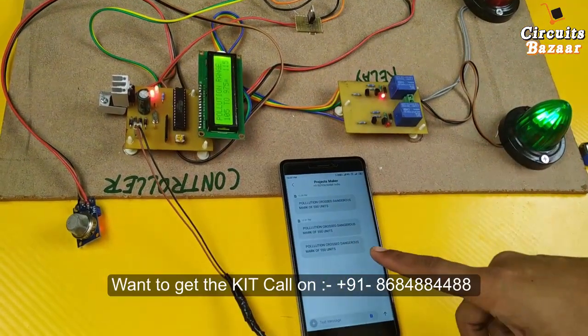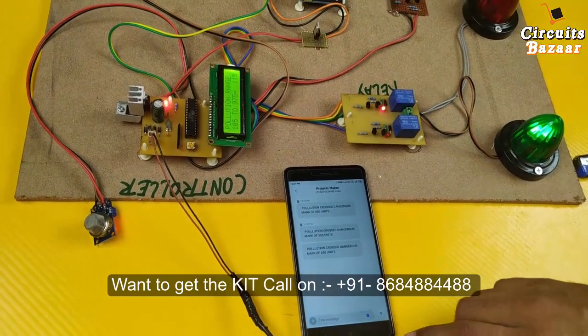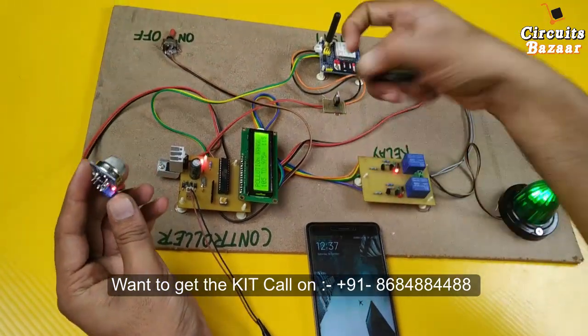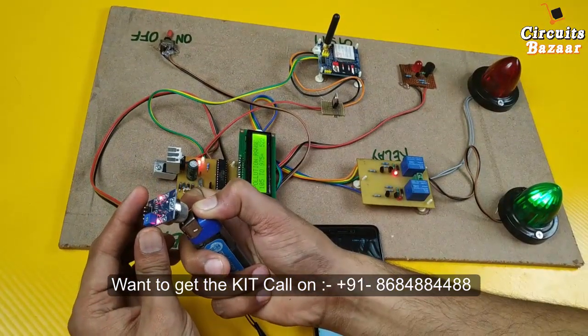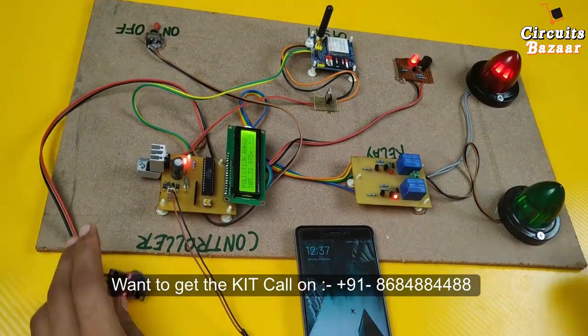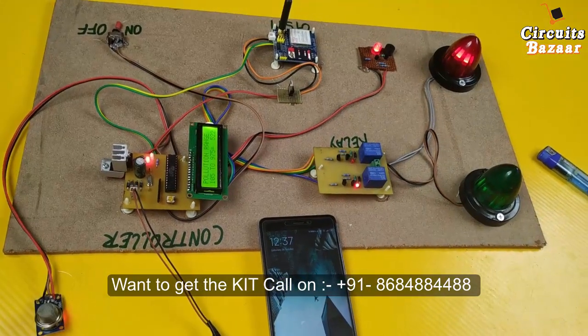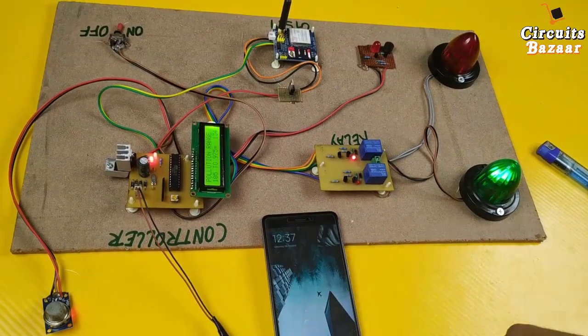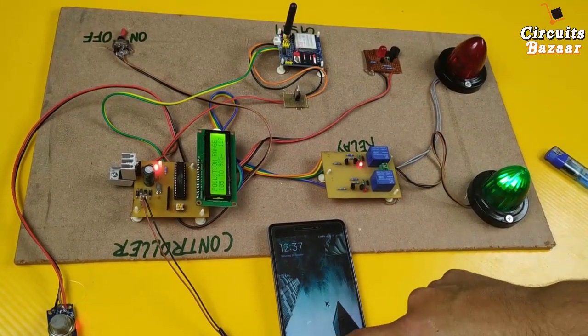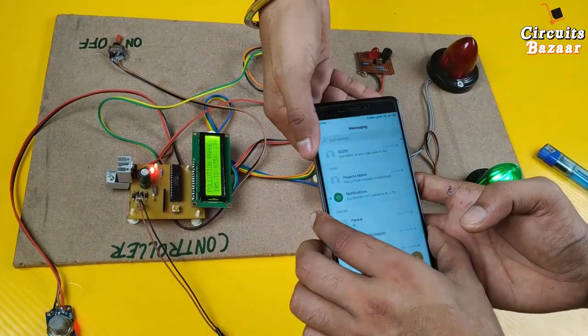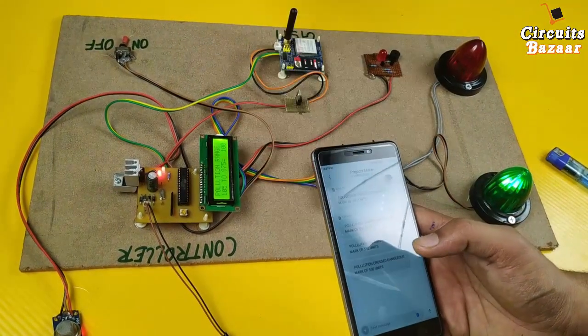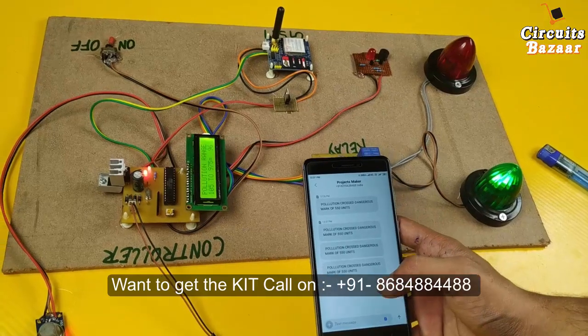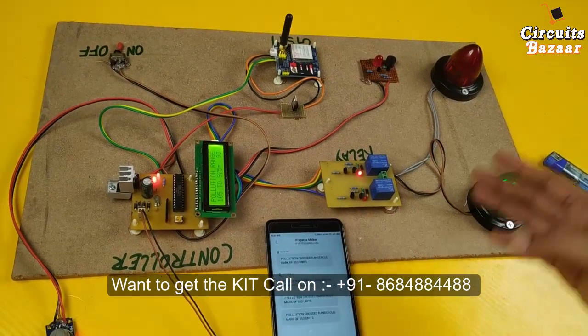So this is the message which we have got. And the message is - both the messages we got, earlier message as well and this message as well. Sometimes network is poor, that's why it happens. So again I am going to increase the range. Now you can see it crossed the limit. You got the message immediately and the message is: message is pollution crossed dangerous mark of 550 units.